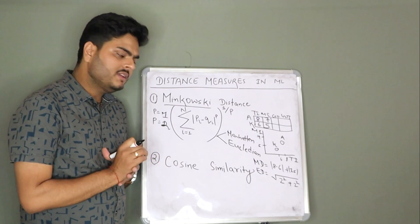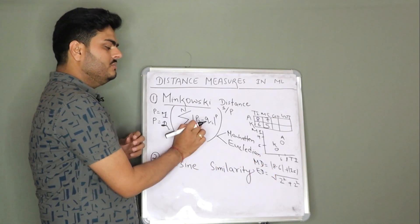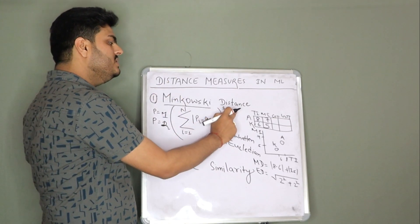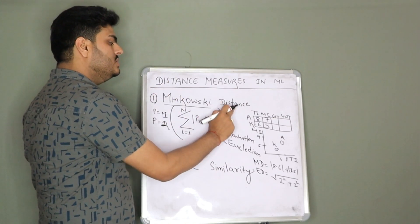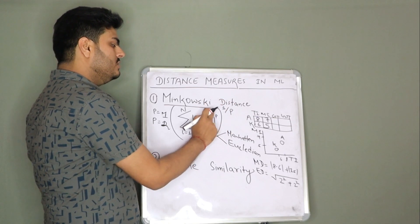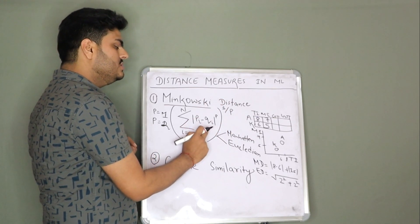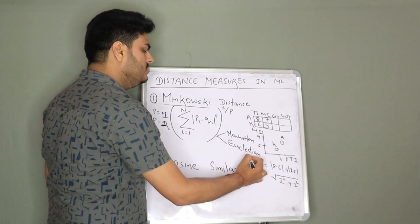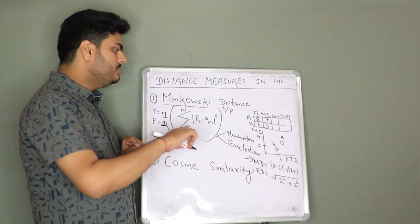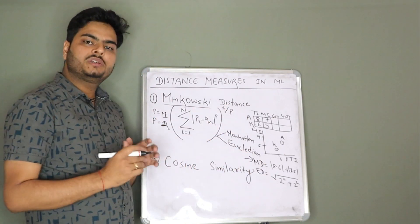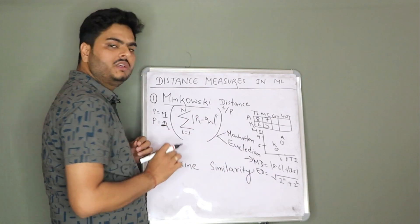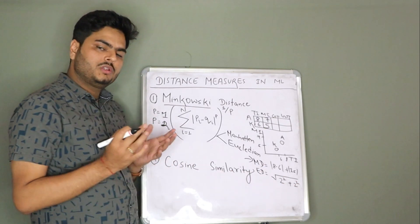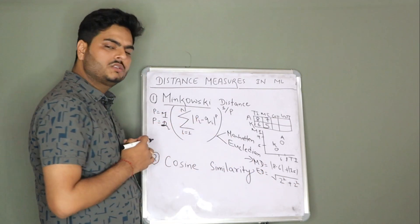Now, what is the difference? Both of these come from the Minkowski formula only. See this carefully — if you put p equal to 1, the outer power term goes away and it is simply the absolute difference of one data point minus another data point — that is your Manhattan. If you put p equal to 2, 1/2 is nothing but square root, so the square root comes here, and then (x1 - x2) + (y1 - y2) whole square — that is your Euclidean distance.